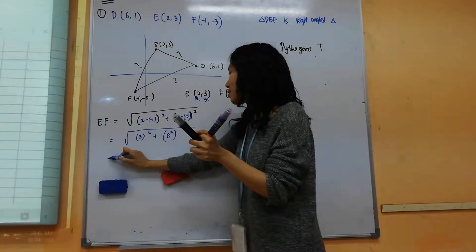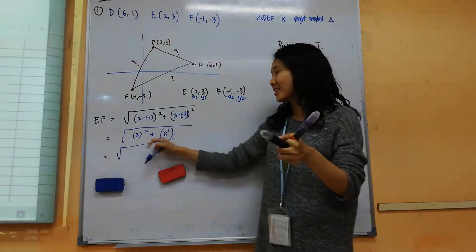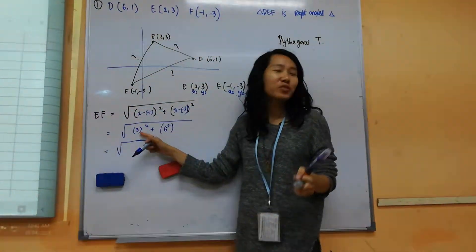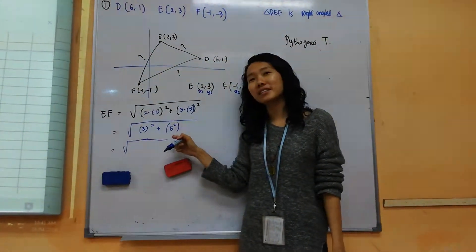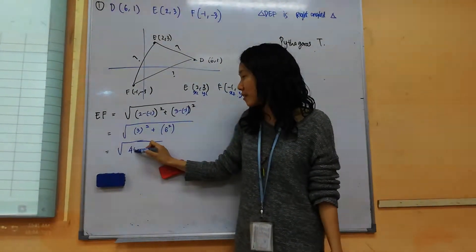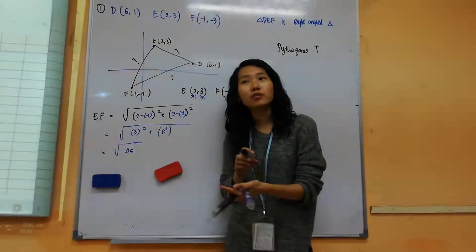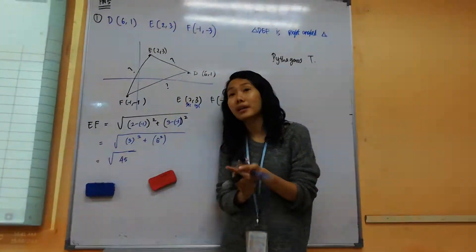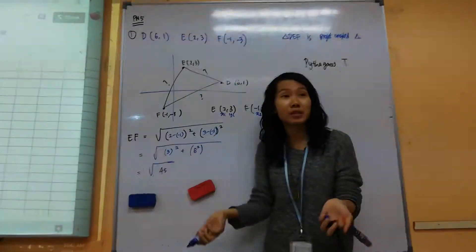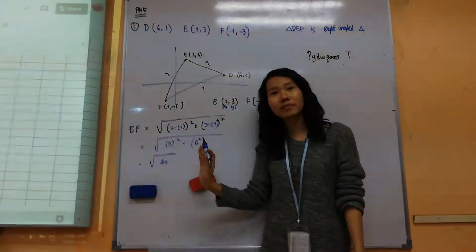So let's do a little bit of quick math here. 3 square is 9, 6 square is 36. So 36 plus 9, 45. Right, so now just leave your answer like that. You don't have to press into calculator because at the end of the day, I want to substitute it into A square plus B square equals to C square. You're going to square it anyway, right? So just leave it like that.